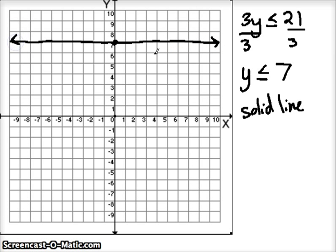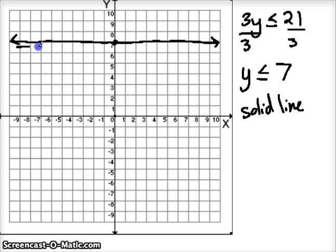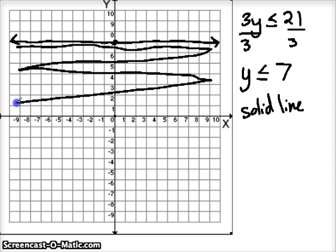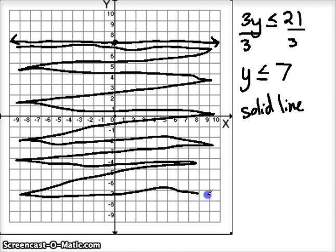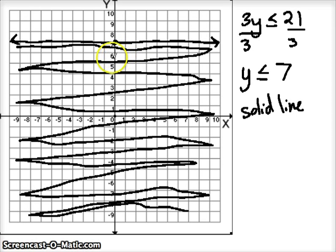The line continues in both directions, but we specifically want values for y that are less than or equal to 7. The or-equal sign means a solid line, just like the or-equal means a solid dot and not an open dot on a number line. We're going to shade any value that is true for less than 7. Any y value less than 7 would be below, so we shade this entire region. You could use the side of your pencil, a highlighter, or whatever you want to darken the region.